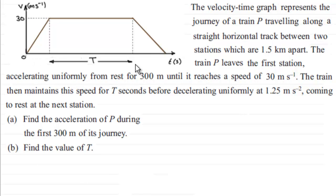What we've got here is a velocity-time graph which represents the journey of a train P travelling along a straight horizontal track between two stations which are one and a half kilometres apart. The train P leaves the first station accelerating uniformly from rest for 300 metres until it reaches a speed of 30 metres per second. The train then maintains this speed for T seconds before decelerating uniformly at 1.25 metres per second per second, coming to rest at the next station. In part A we've got to find the acceleration of P during the first 300 metres of its journey, and then in part B find the value of T.